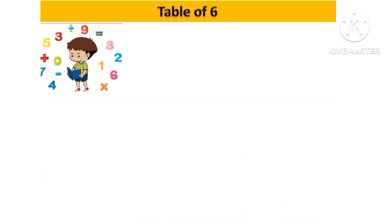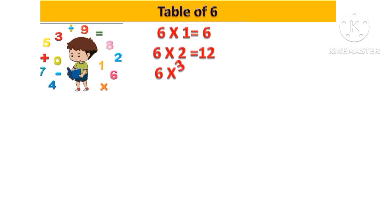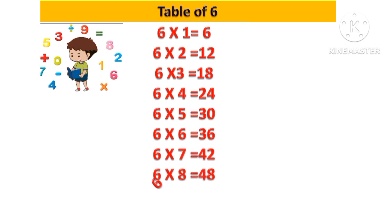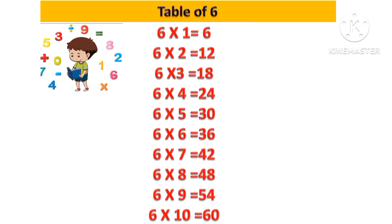Let's revise: 6 one's are 6, 6 two's are 12, 6 three's are 18, 6 four's are 24, 6 five's are 30, 6 six's are 36, 6 seven's are 42, 6 eight's are 48, 6 nine's are 54, 6 ten's are 60.